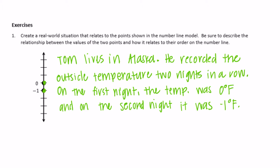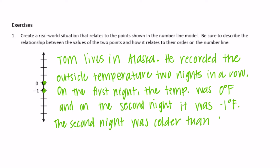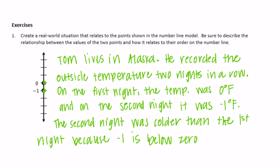It says describe the relationship between the values of the two points and how it relates to their order on the number line. So, negative one is less than zero, meaning that the second night was colder than the first night, because negative one is below zero on the number line. You can have a completely different problem, but just make sure the end part describes the relationship between zero and negative one.